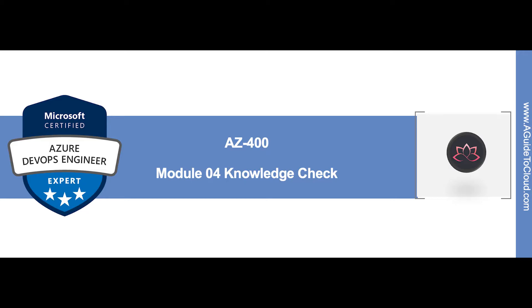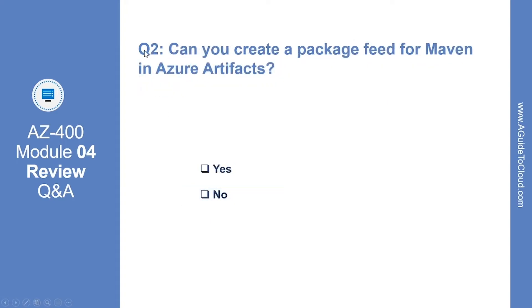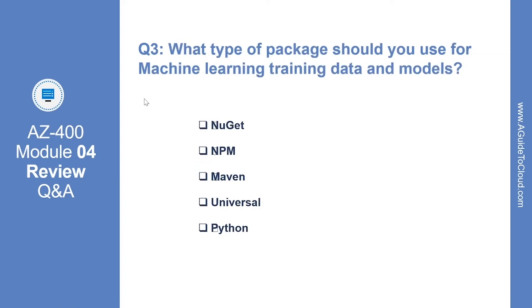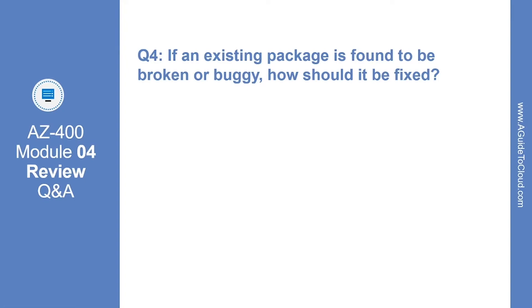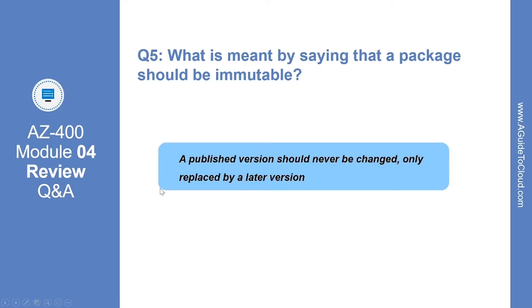In this section we are going to go through Module 4 review questions and answers. Question 1: if you are creating a feed that will allow yourself and those you invite to publish, what visibility should you choose? The correct answer is private. Question 2: can you create a package feed for Maven in Azure Artifacts? Yes. Question 3: what type of package should you use for machine learning training data and models? The correct answer is universal. Question 4: if an existing package is found to be broken or buggy, how should it be fixed? Publish a new version. Question 5: what is meant by saying a package should be immutable? A published version should never be changed, only replaced by a later version.